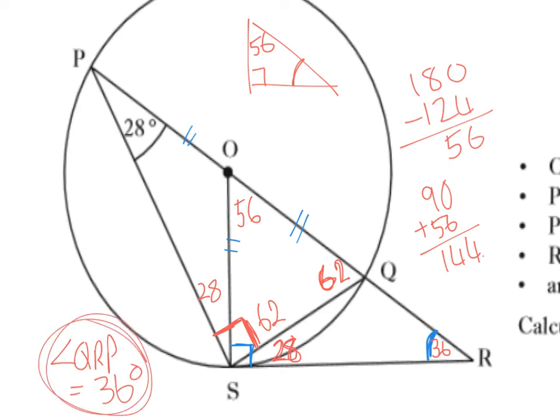I could have also gone and got the other side of the 62 — saying that was 118 — and used 118 and the 28 to also get the 36 as well.